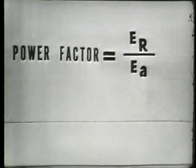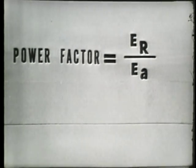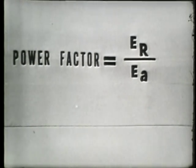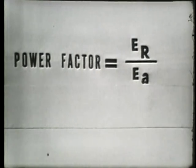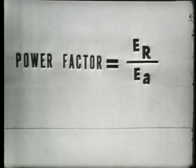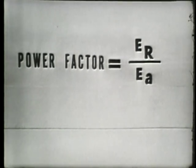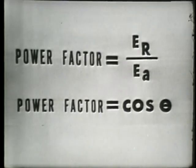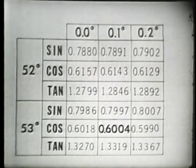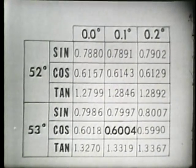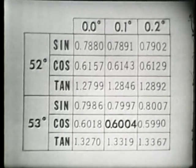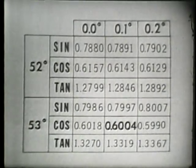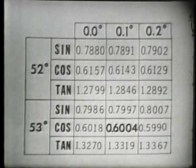Not only can we find total impedance and phase angle with trigonometry — we can also find the power factor. The power factor is equal to the ratio of ER to the voltage applied. Just a moment ago we used the same ratio to find the cosine of theta, our phase angle. So naturally the power factor must also be equal to the cosine of theta. Using our trig table again with a phase angle of 53.1 degrees, the cosine of that angle is 0.6004, or 0.6.